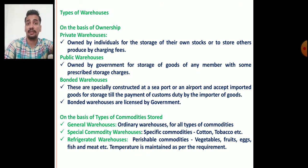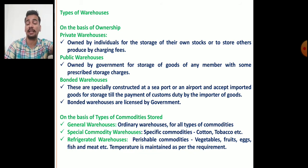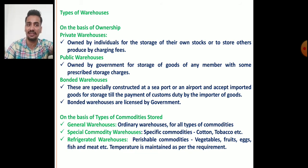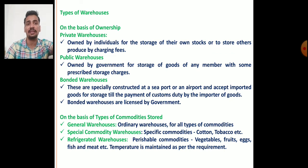The third type is bonded warehouses. These are specially constructed at a seaport or near an airport and accept imported goods for storage until payment of customs duty by the importer. Bonded warehouses are licensed by the government.